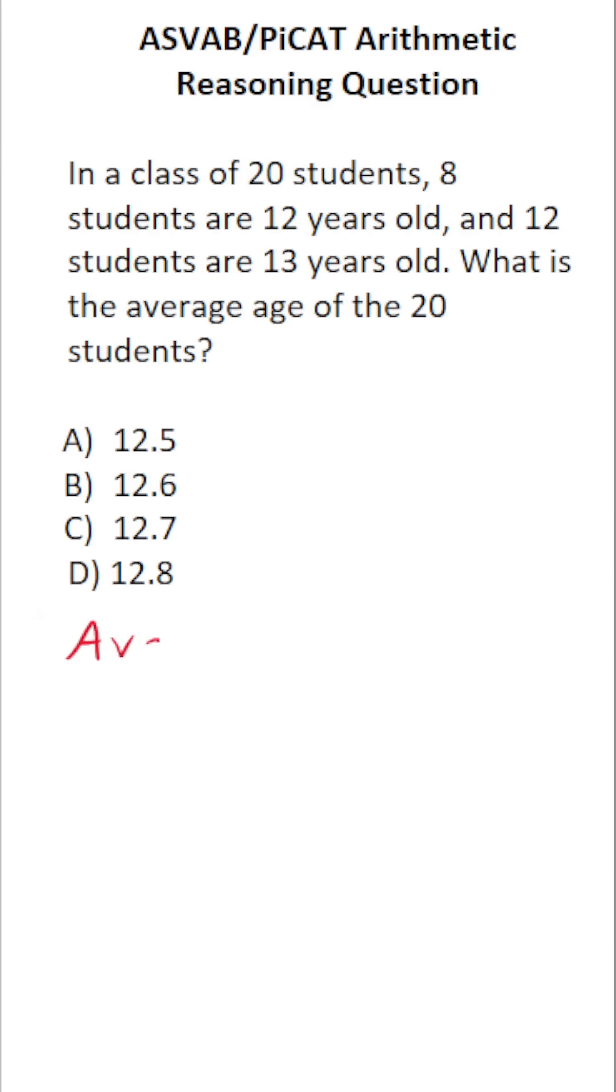So in this case, we're going to be calculating a weighted average. We're going to do that almost the same way that we would calculate a normal average. That is to say, we're going to sum the ages of the students and divide by the total number of students in the class.